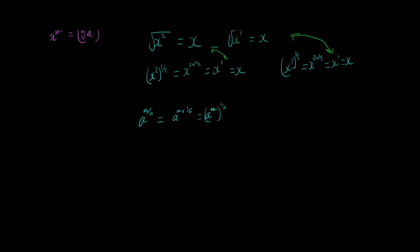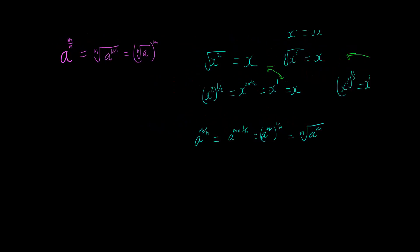And I've already shown that anything to the power of one over n is the nth root. So that gives me the nth root of a to the m which was this part of the rule all the way up there.